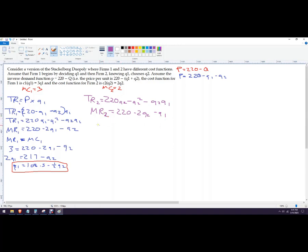So then I'm going to set that equal to 2, just like we did over here. So 2 equals 220 minus 2Q2 minus Q1. Rearranging, 218 minus Q1 equals 2Q2. And then divide through by 2, and we get 109 minus 0.5 Q1. This is firm 2's reaction function. So now I got them both.